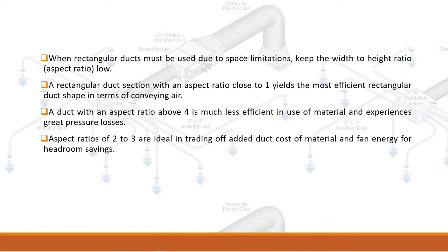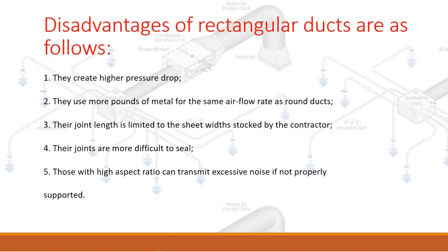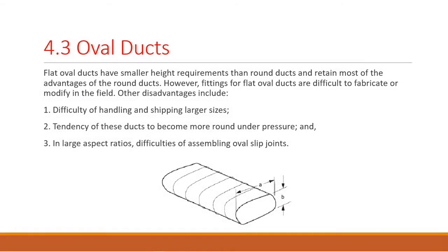Aspect ratios of 2 to 3 are ideal in trading off added duct cost and fan energy for headroom savings. Disadvantages of rectangular ducts include: one, higher pressure drop; two, more pounds of metal for the same airflow rate as round ducts; three, joint length limited to sheet width; four, joints more difficult to seal; five, high aspect ratio ducts can transmit excessive noise if not properly supported.